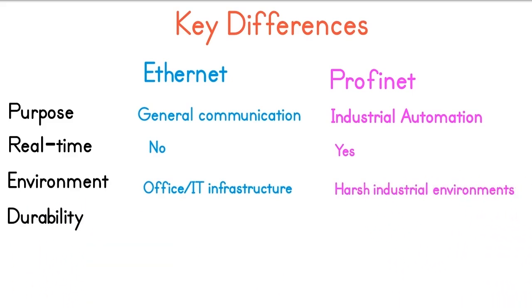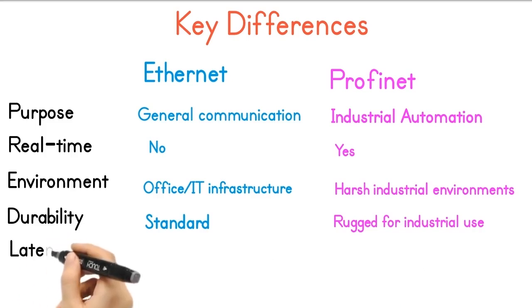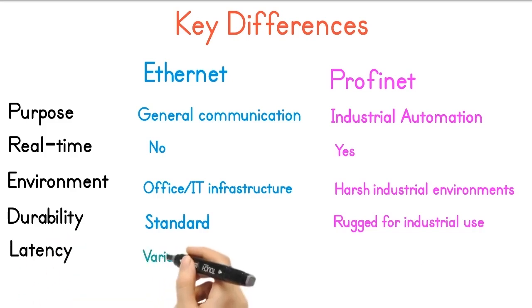Durability: Ethernet provides standard durability, while Profinet is rugged for industrial use. Latency: Latency of Ethernet can be variable, while the latency of Profinet is low and predictable.